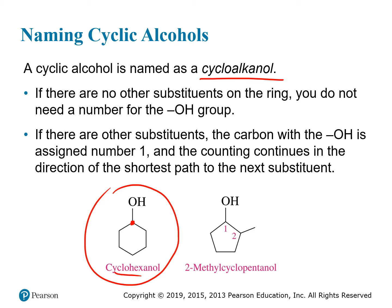However, when we add another substituent, we also have to start numbering. We still don't need the one because the OH group, being the most important functional group, is always considered to be on the one carbon. But you would want to count the shortest distance to the next substituent, which in this case is a methyl group. So here we would have 2-methylcyclopentanol.